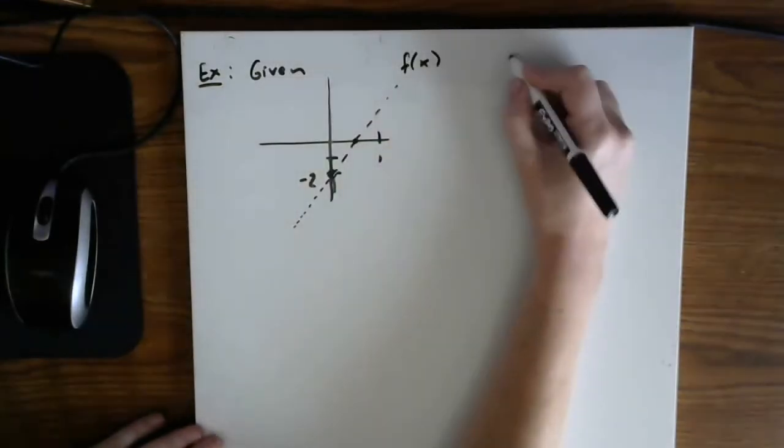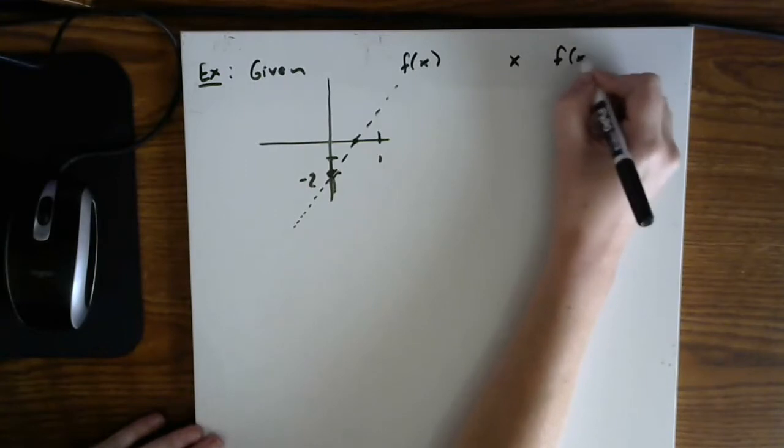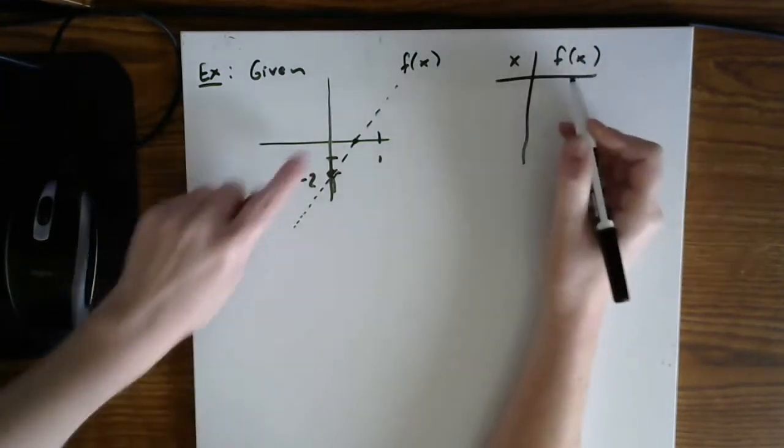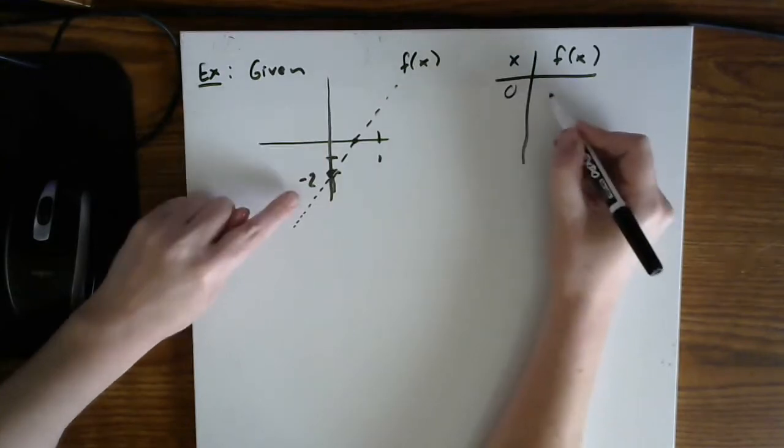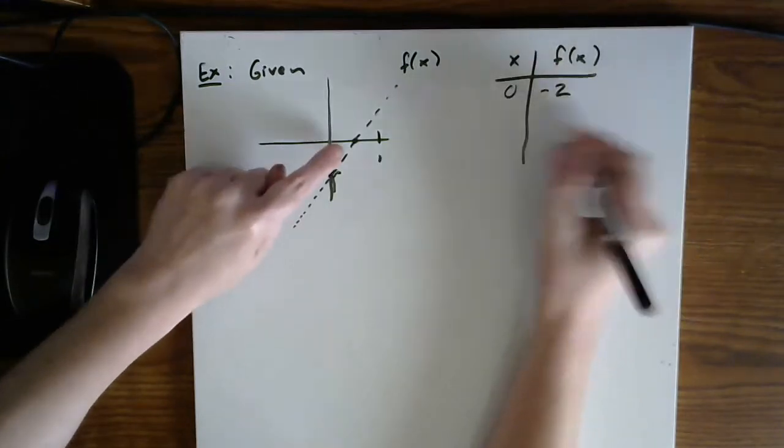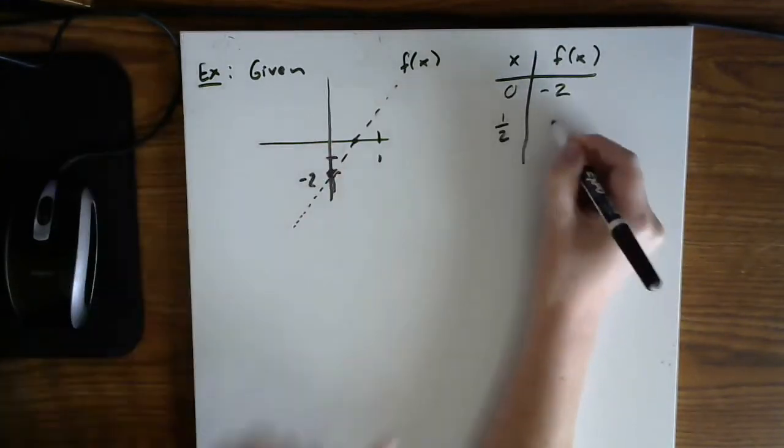And then let's make its x-intercept at one half. So here's my original function f of x. And maybe I'll even put together a table. So if x was zero, y was negative two. If x was one half, y was zero.